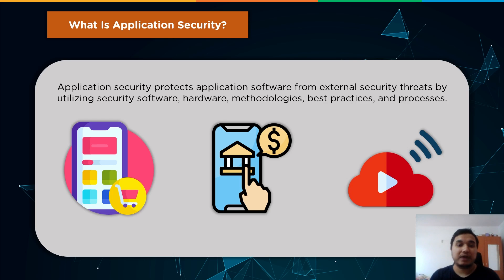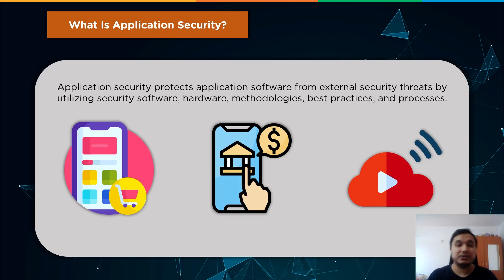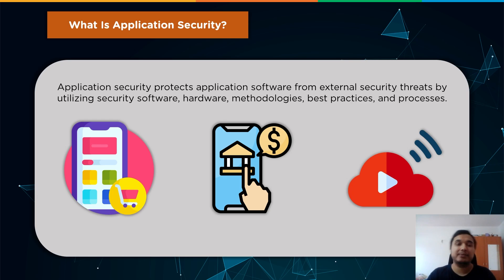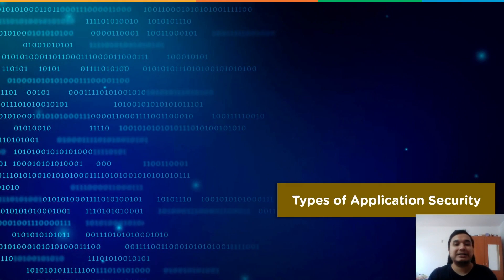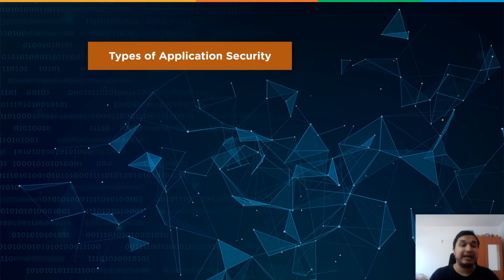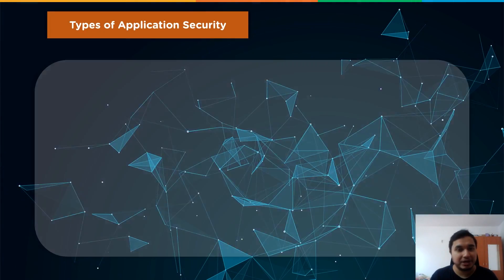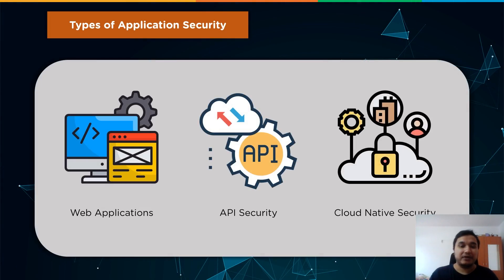Because of outsourced development, the number of legacy programs, in-house development using third-party open source, and commercialized off-the-shelf software modules, the software supply chain has become considerably more convoluted. Now that we understand application security on a general level, let us go through some of the different categories or types of application security.